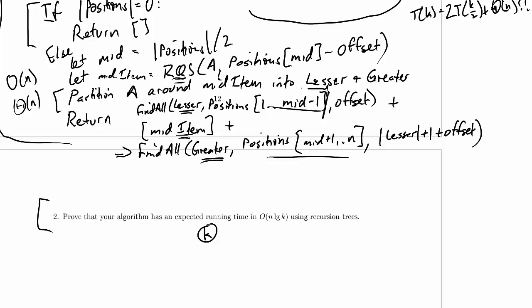I do have to divide the positions array up into 1 to mid minus 1 and mid plus 1 to n. That could take order k time. Actually, if we just pass low and high parameters, that will take constant time.